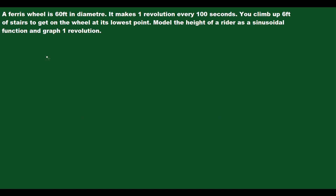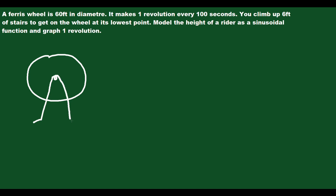I like to start with a sketch of what's going on here. So you have a Ferris wheel that looks something like that. Usually a Ferris wheel has these sort of support legs and they're on the ground. So here we'll draw the ground. We're told that you have to walk up six feet of stairs to enter the ride, so you have this sort of step here and then you get on the ride. The height of these stairs is six feet.